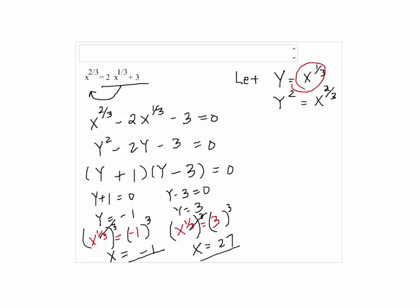So, the answers are x equals negative 1 and 27.